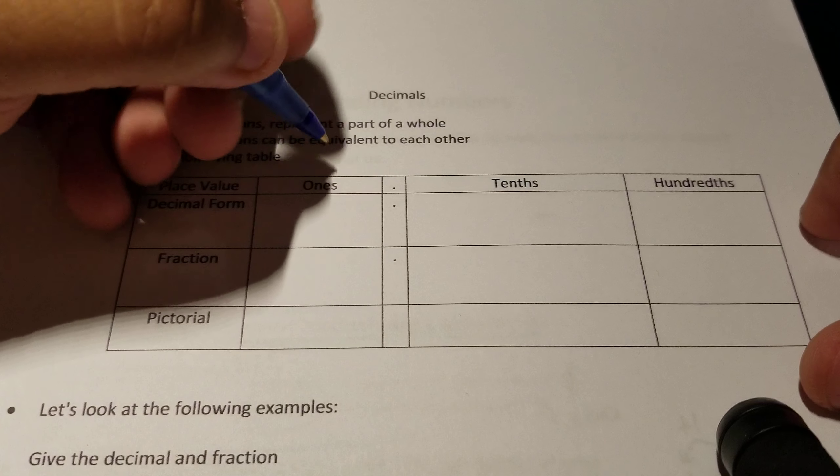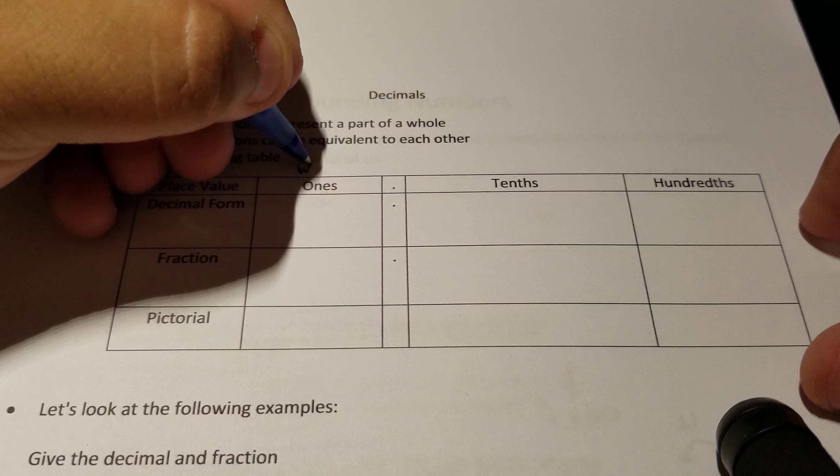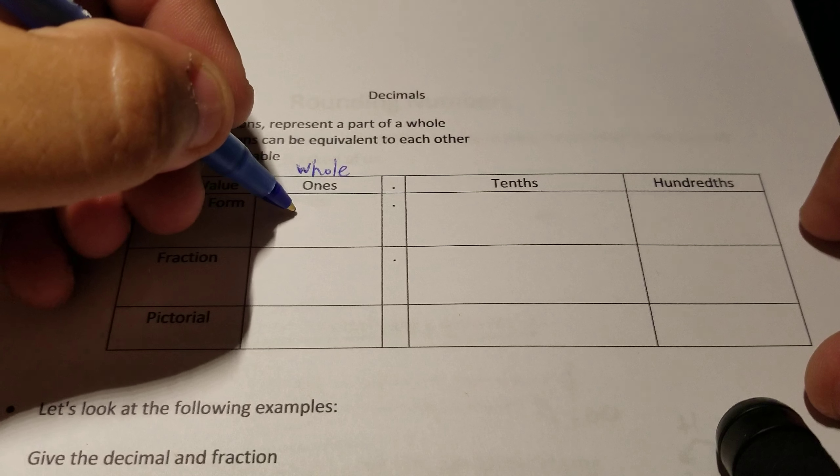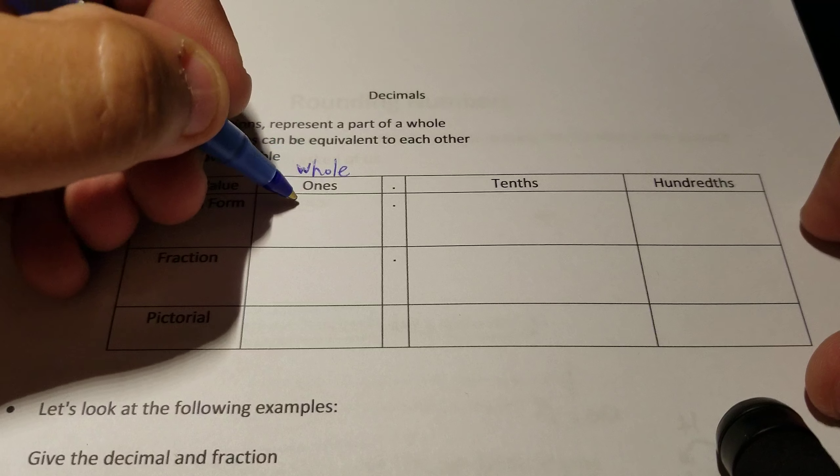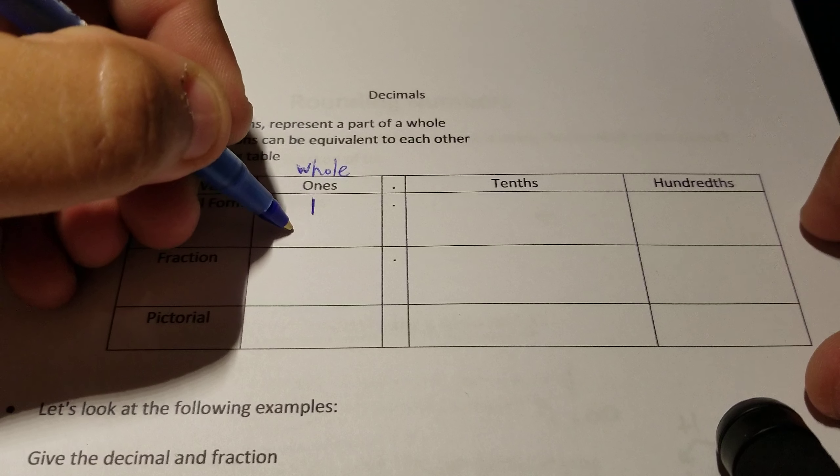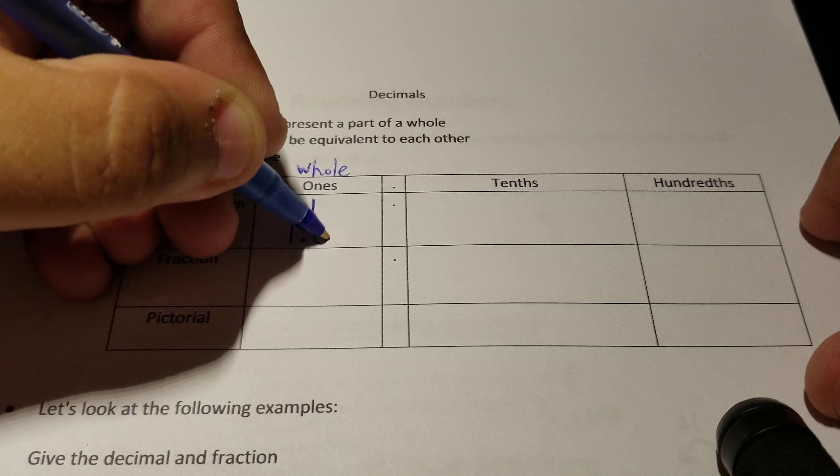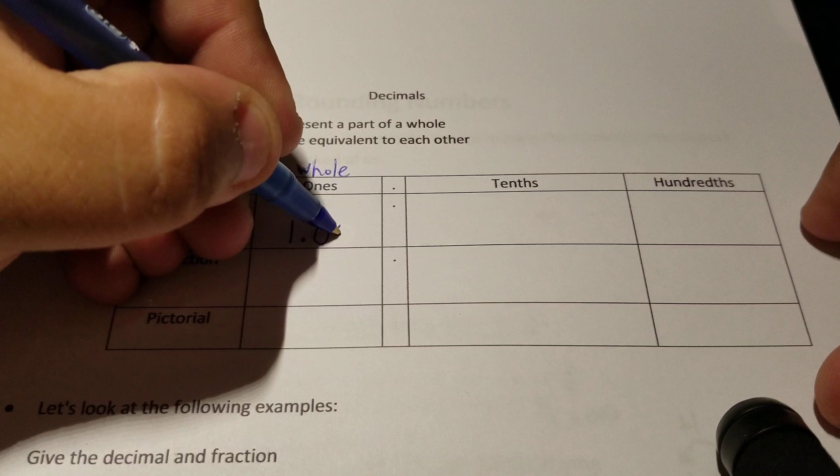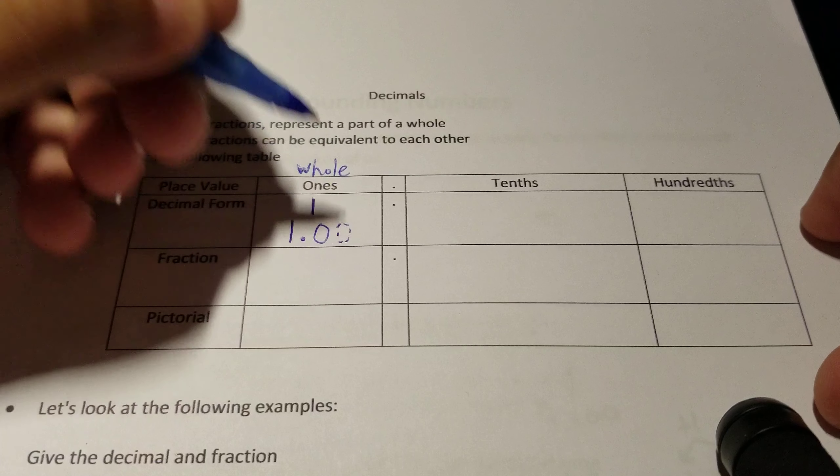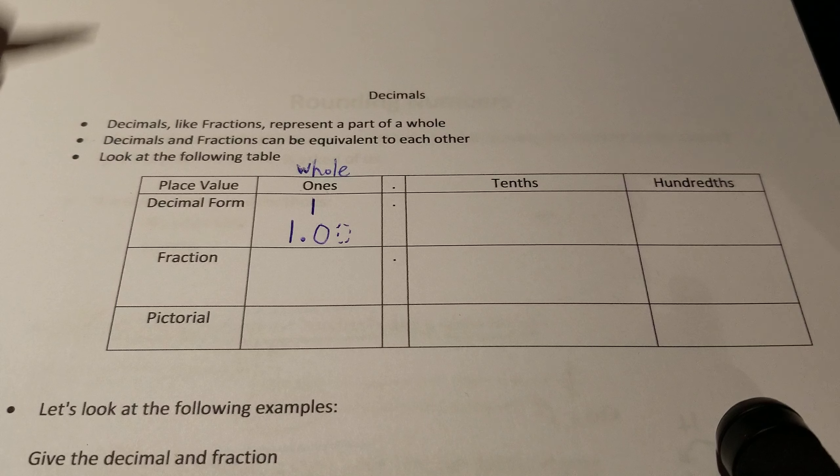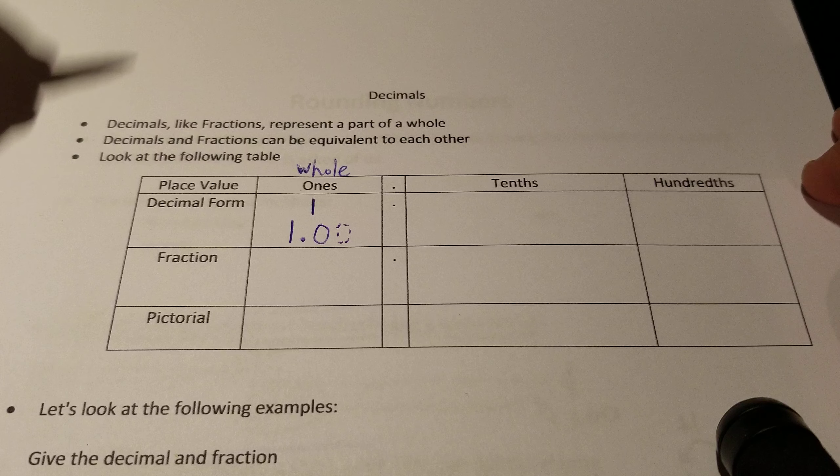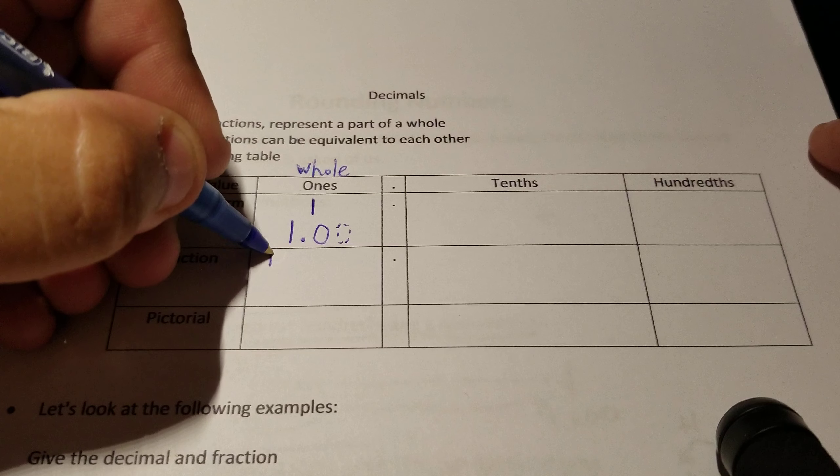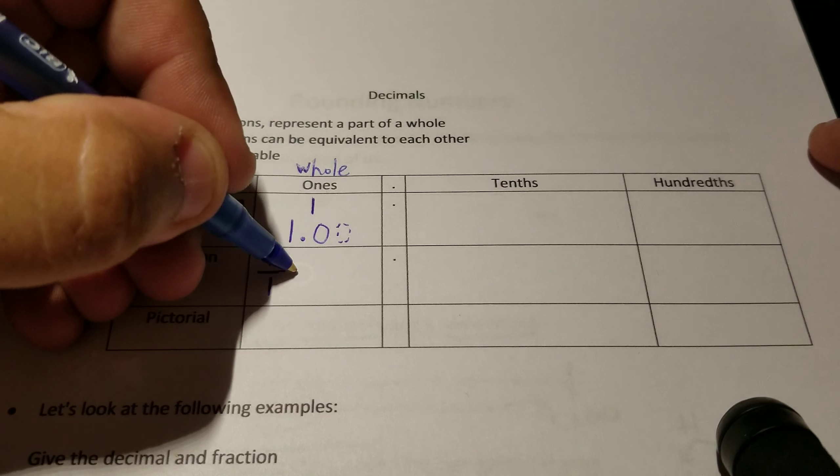A one can also be known as a whole. This is represented with just a simple one, or you can also write it as one and zero tenths. And I'll put an imaginary zero to show one and no hundredths. They all represent the same thing. In a fraction, in order for a fraction to be considered a whole, the numerator and denominator have to be equal.